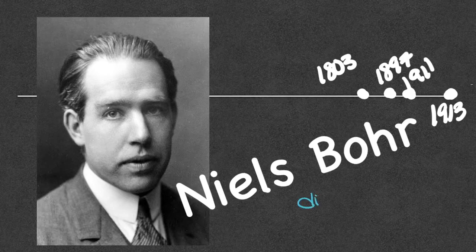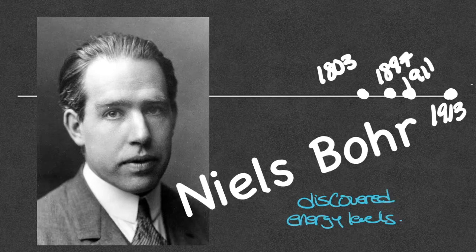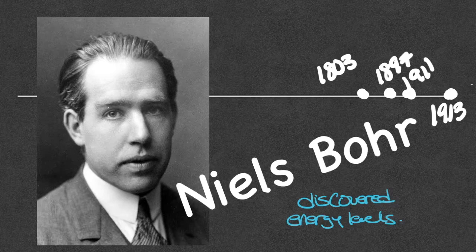We say Niels Bohr discovered the energy levels. Before this, electrons were just thought to be hanging out in empty space. Bohr applied a mathematical equation and discovered that electrons actually travel in energy levels around the nucleus. Electrons in energy levels close to the nucleus have less energy, while electrons in the outermost energy levels have the most energy.